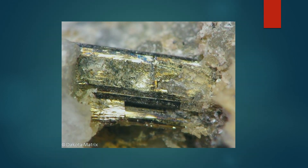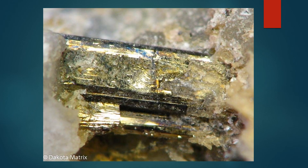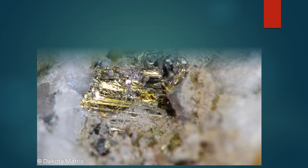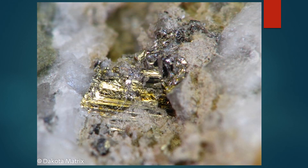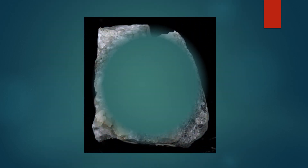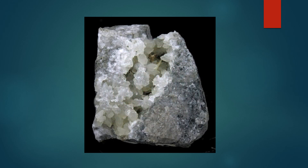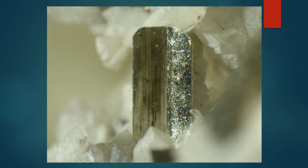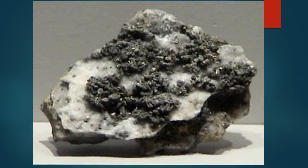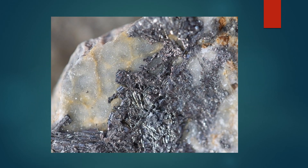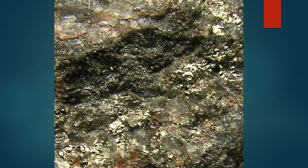Distribution: krennerite is often found in major gold mines in countries like the United States, Australia and Kazakhstan. The ore is named after Hungarian mineralogist Josef Krener, who was the first to study and describe it. Extraction and processing: krennerite requires roasting or heat treatment to break the tellurium bonds and separate the gold from the compound. Although less common than other gold ores, krennerite remains a valuable resource in the gold mining industry, especially in regions where it is widely distributed.